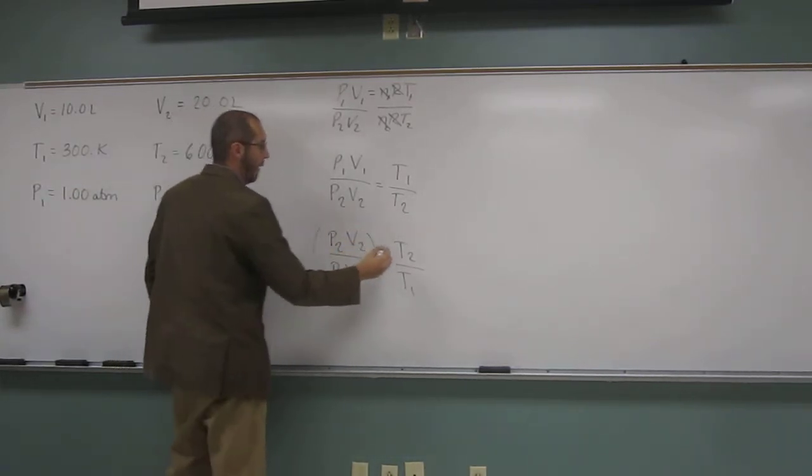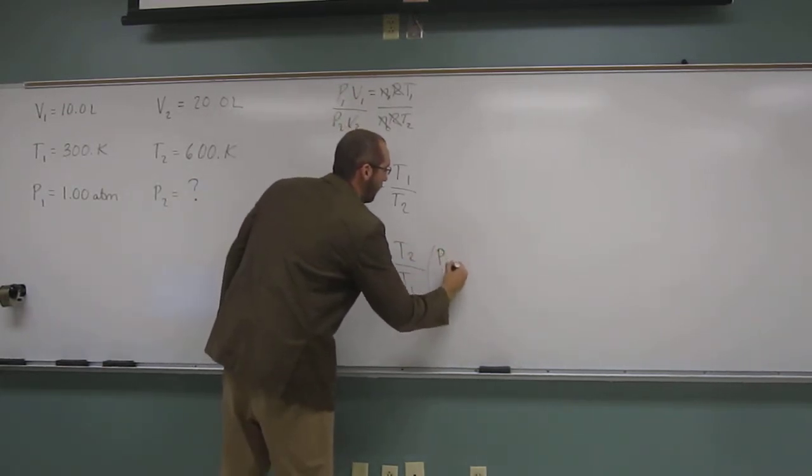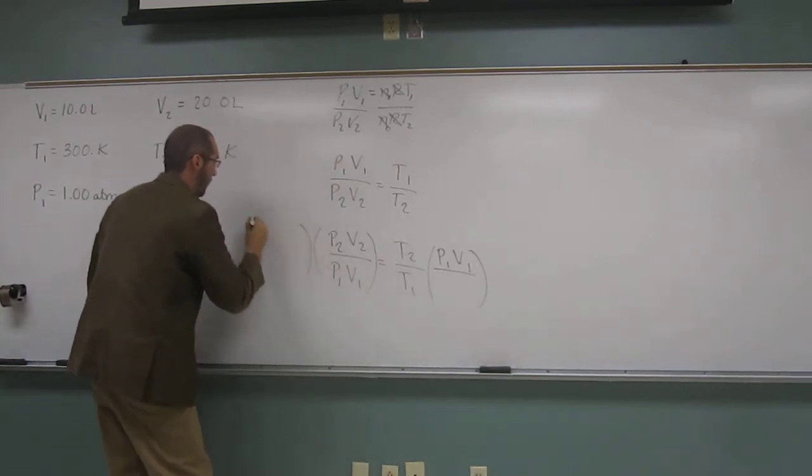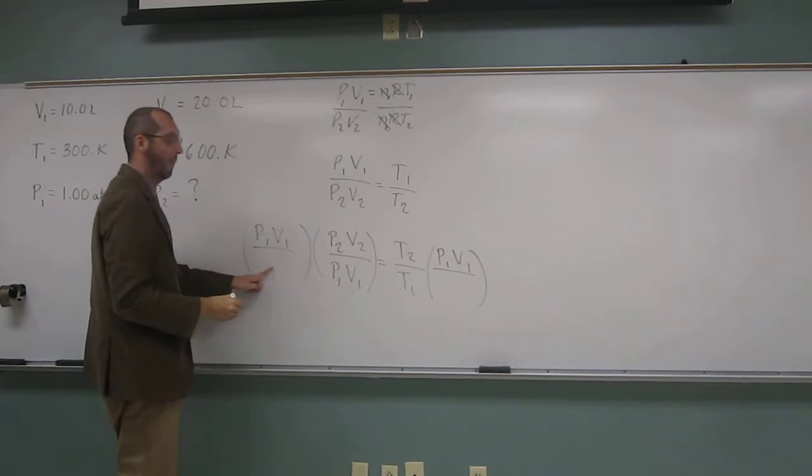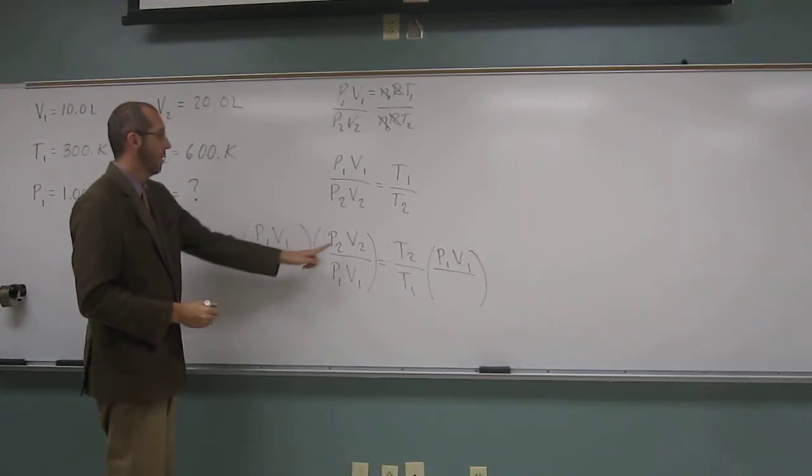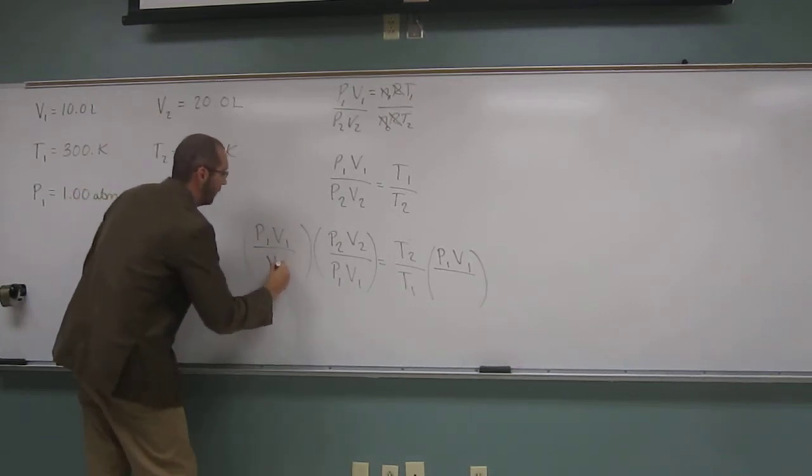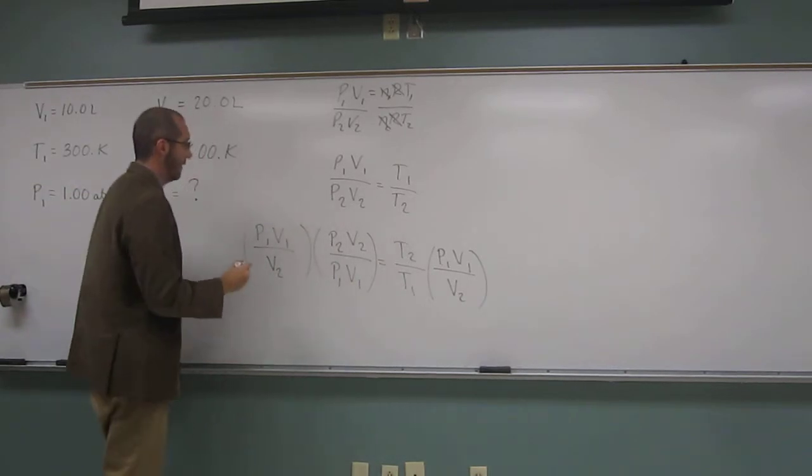And divide both sides by what? V2. So P1V1 and divide it by what did we say? V2. Because we want to get P2 by itself, right? So if we divide by V2. Okay? Let's cancel now.